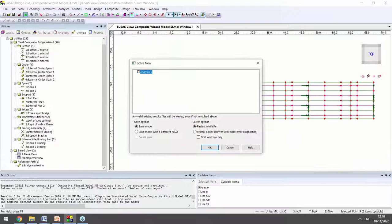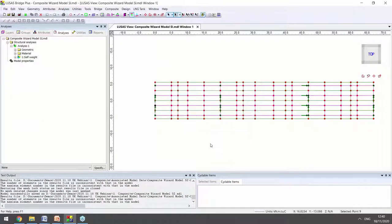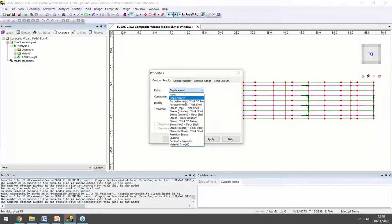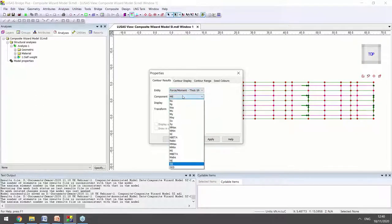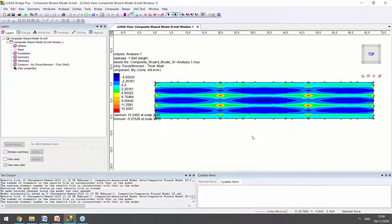If I then solve to get results, we can then look at, for example, contours of bending moment in the shells. And this would be suitable for looking at the transverse bending moment in the deck slab in order to design your transverse reinforcement.